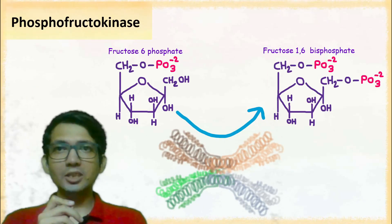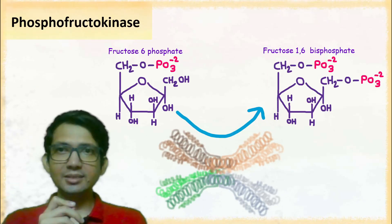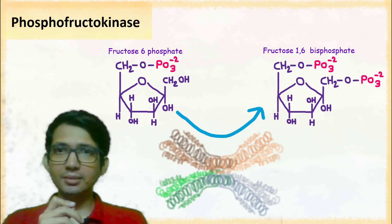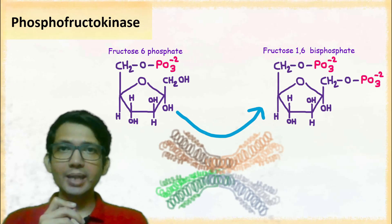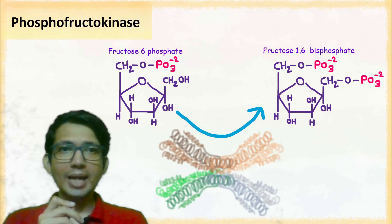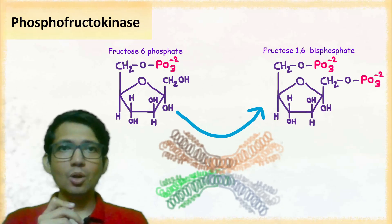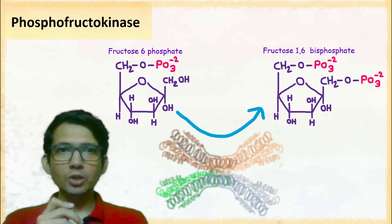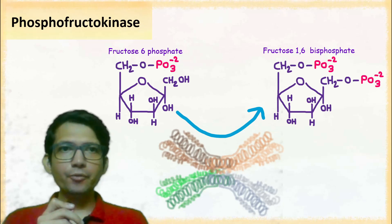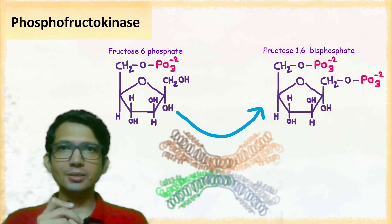Let's talk about the enzyme phosphofructokinase. The enzyme phosphofructokinase carries out phosphorylation of fructose 6-phosphate to form fructose 1,6-bisphosphate.